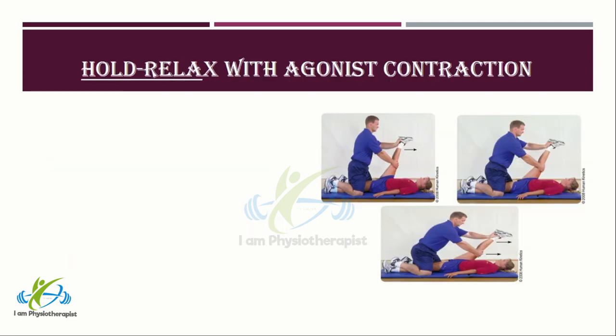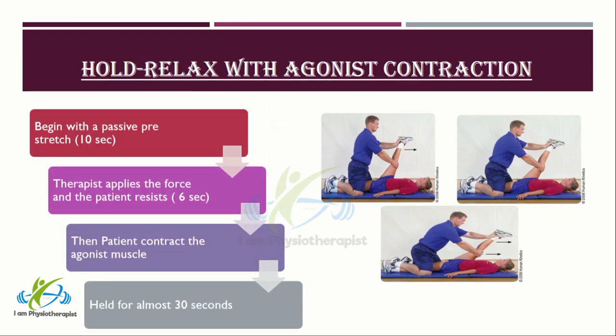The hold-relax with agonist contraction is the most effective PNF stretching technique, due to facilitation via both reciprocal and autogenic inhibition. The technique begins with a passive pre-stretch for 10 seconds. The therapist applies force and the patient resists the movement for almost 6 seconds. Then the patient contracts the agonist muscle — the muscle opposite to the affected muscle — to provide additional stretching force, and a passive stretch is held for almost 30 seconds.